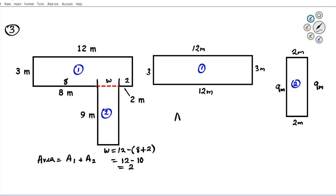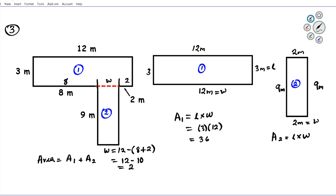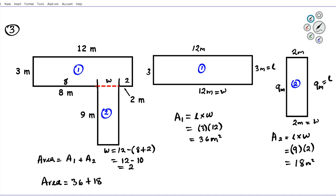Now we know the dimensions of both rectangles. For A1: length times width = 3 times 12 = 36 square meters. For A2: length times width = 9 times 2 = 18 square meters. The total area of this figure is A1 plus A2: 36 plus 18.